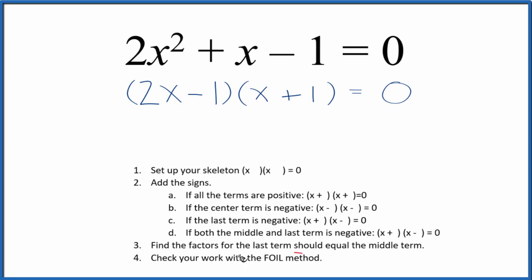But we can check our work with the FOIL method here. We'll multiply the first term, the outside term, the inside, and then the last.